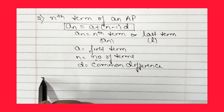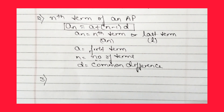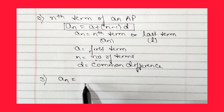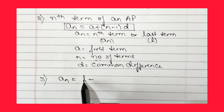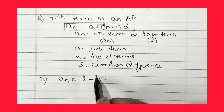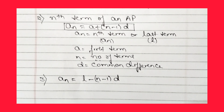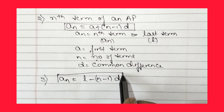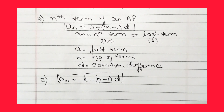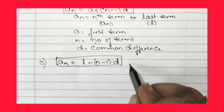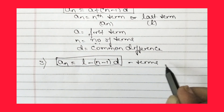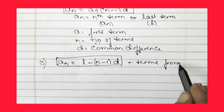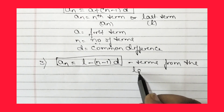The third formula is to find terms from the last term. When the last term l is given, we can use: aₙ = l - (n-1)d. This formula is used to find terms counting from the last term.